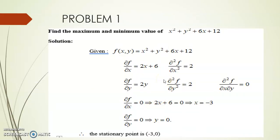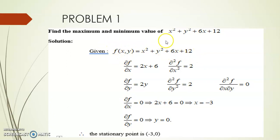Let's start with the problems. Problem 1: find the maximum and minimum value of f(x,y) = x² + y² + 6x + 12. We write down the given function as f(x,y) because we have both x and y variables. If z were also involved, we would name it f(x,y,z).